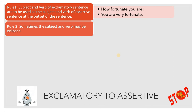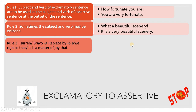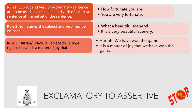Second rule: sometimes the subject and verb may be eclipsed. 'What a beautiful scenery!' becomes 'It is a very beautiful scenery' — the same type of statement but with the addition of 'very.' Rule three: when 'hurrah' or 'bravo' is used, it is replaced by 'I rejoice' or 'we rejoice that' or 'it is a matter of joy.' So 'Hurrah! We have won the game' becomes 'It is a matter of joy that we have won the game.'